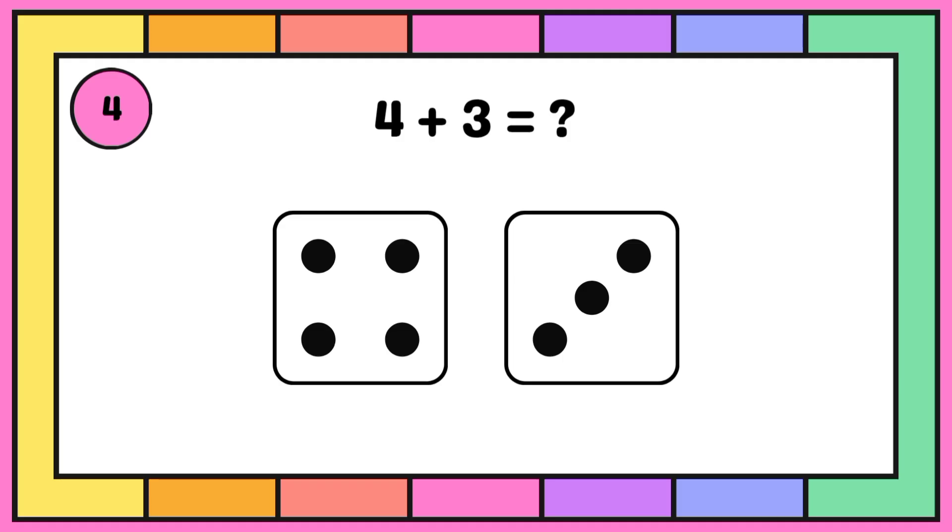Count the numbers given on the dice. Four plus three is seven.